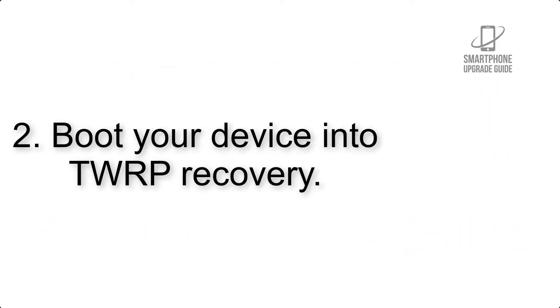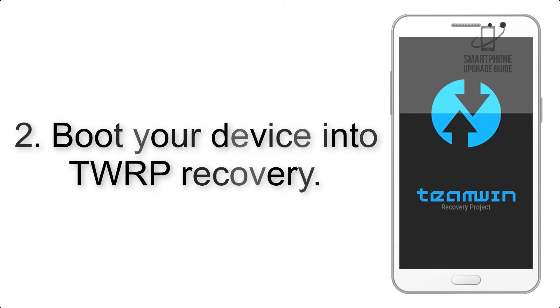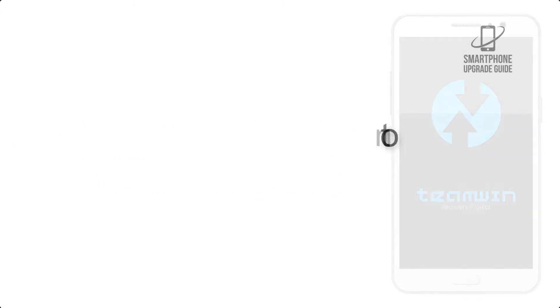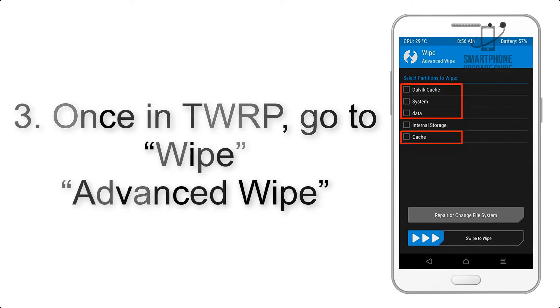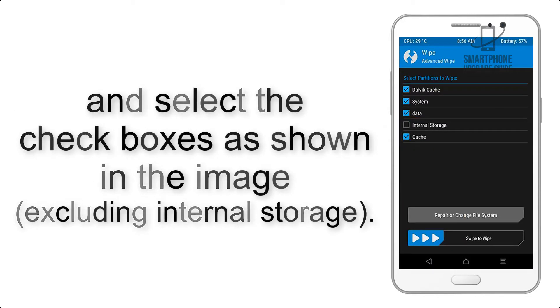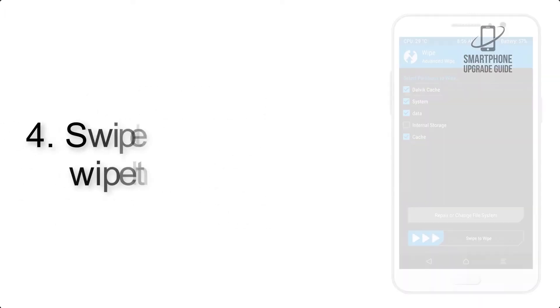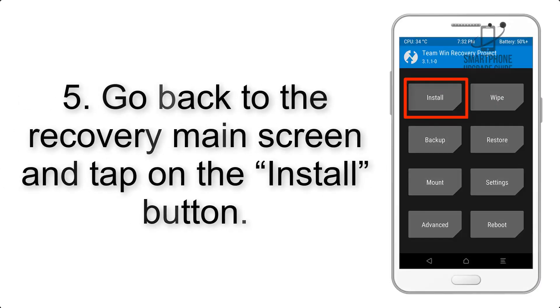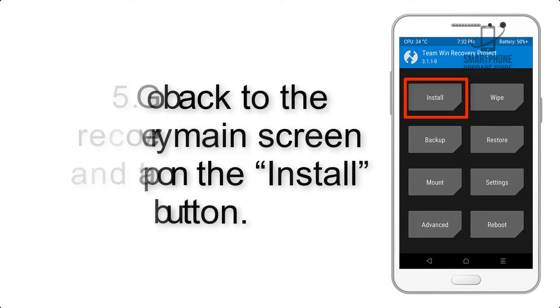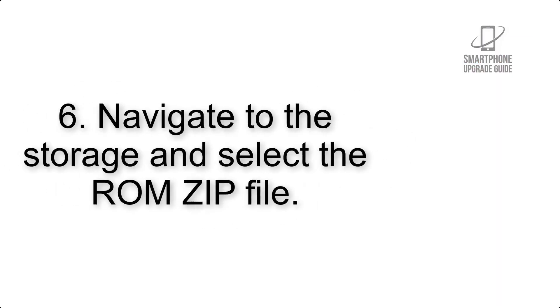Step 2: Boot your device into TWRP recovery. Once in TWRP, click on Wipe, then Advanced Wipe, and select the checkboxes as shown in the image, excluding internal storage. Step 4: Swipe the button to wipe the device.